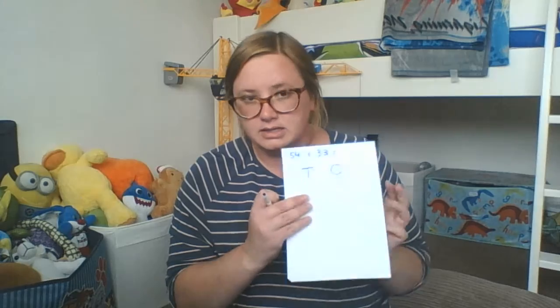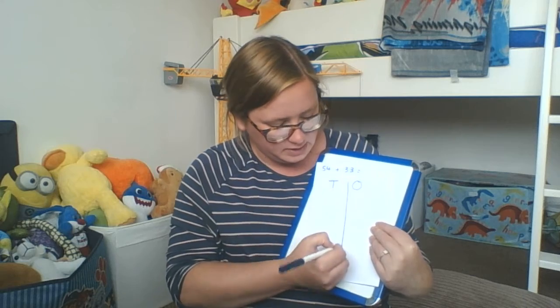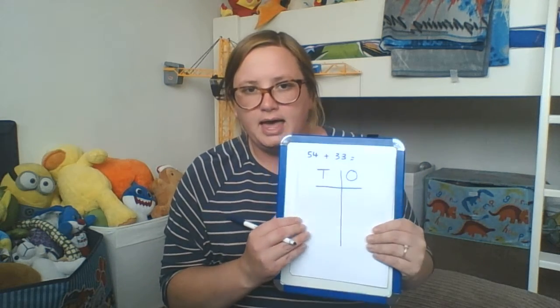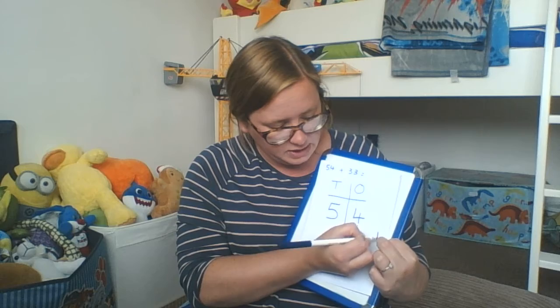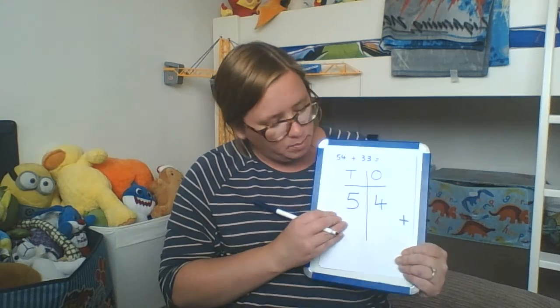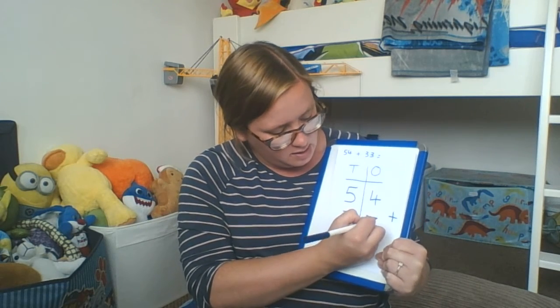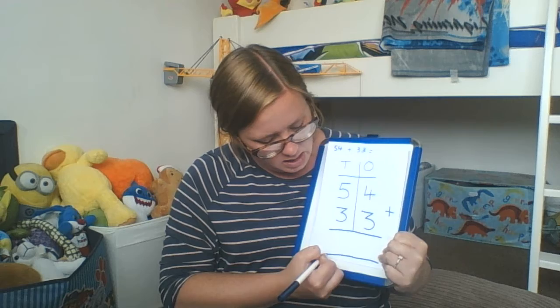Looking next at the addition number sentences: we've got 54 add 33. I'm going to set out my columns — my tens and ones column — and split it down the middle, because that helps me to really see between the two columns. I'm going to pop in my 54, which is 5 tens and 4 ones, and put my addition symbol there — make sure I do it the right way around, otherwise it will look like a multiplication symbol — and then pop in my next number, 33, which is 3 tens and 3 ones, and put in my nice big equals sign.